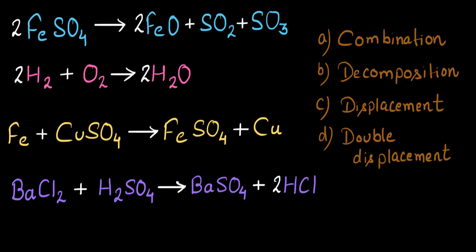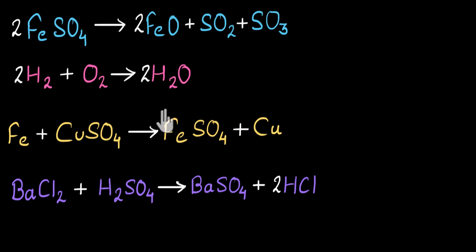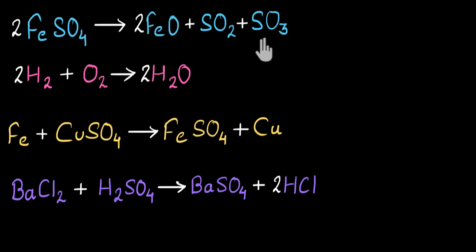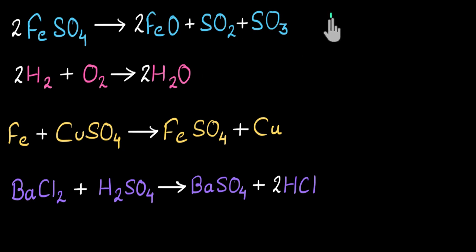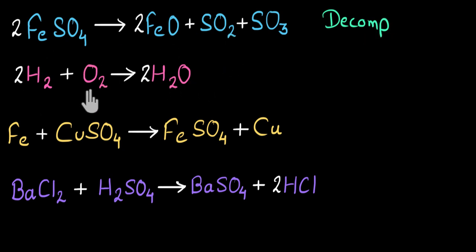Let me hide the question so I have some space to write. Now the first reaction: I have iron sulfate on the reactant side, and on the product side I'm getting iron oxide, sulfur dioxide, and sulfur trioxide. I can notice that I have one reactant and multiple products — one reactant is breaking down or decomposing into multiple products. That is an example of a decomposition reaction. In decomposition, one reactant breaks down into multiple products.